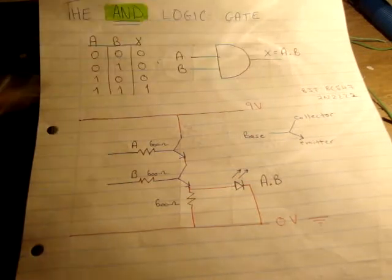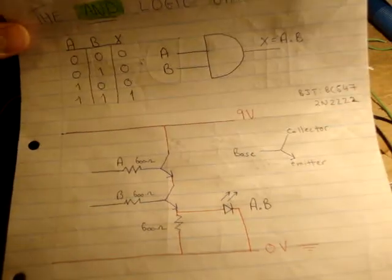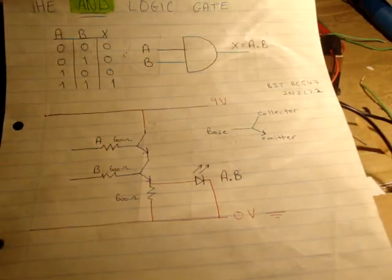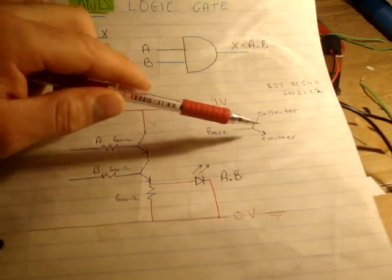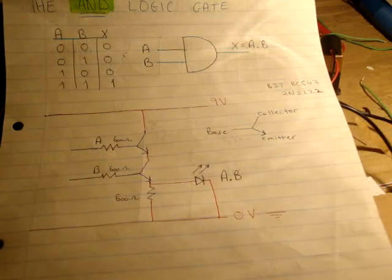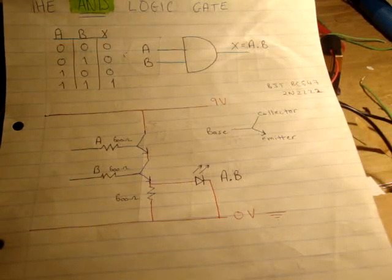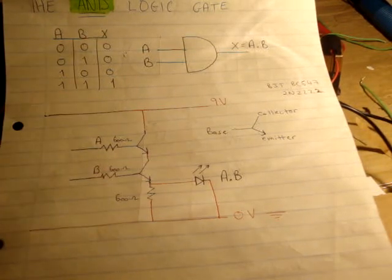That dot there is the Boolean symbol for AND. I'm also using a bipolar junction transistor where I have a base, an emitter, and a collector. The one I'm using is a BJT, specifically a BC547 or a 2N2222 transistor. I'm also using 600 ohm resistors.